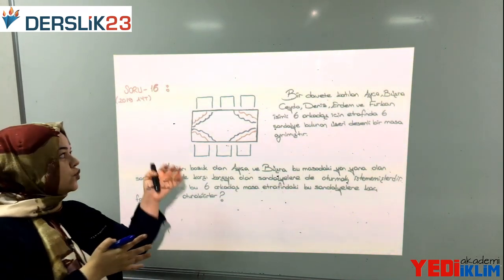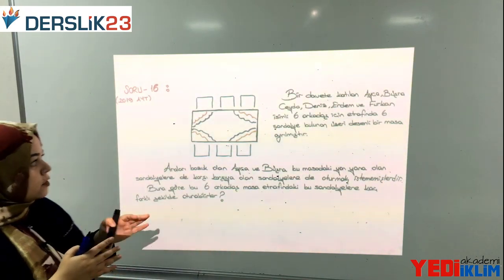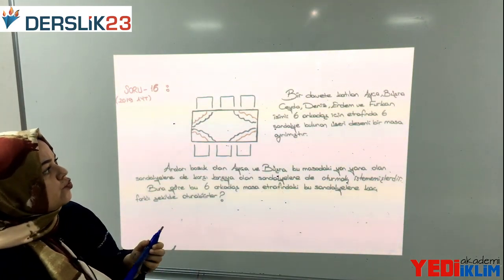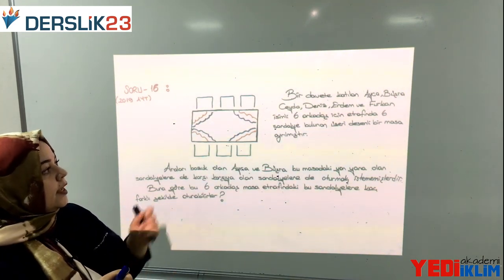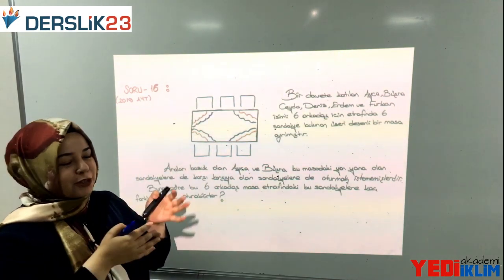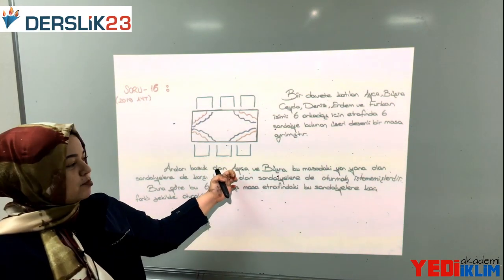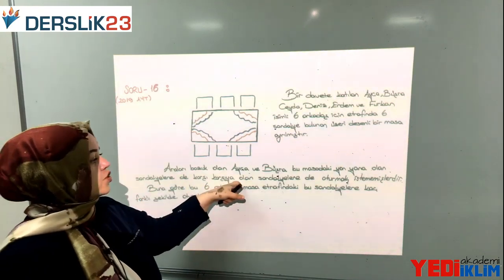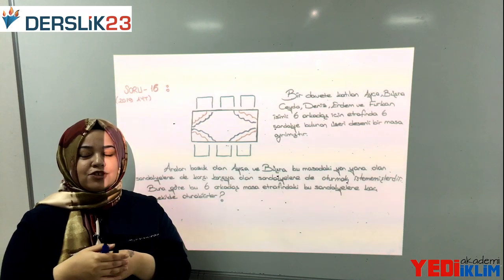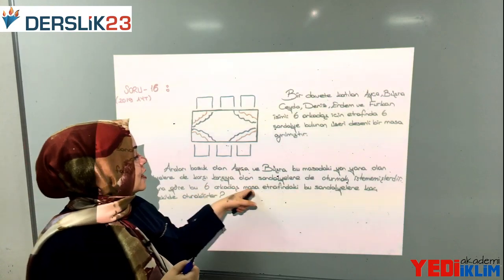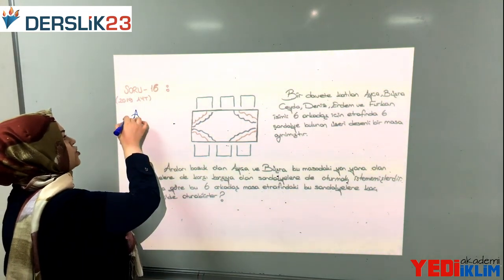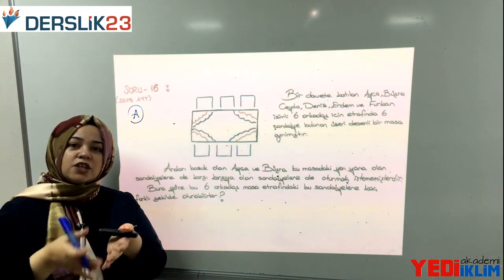Permütasyonun kapanışı olarak 2019'da çıkmış bir soru. Bir masada 6 sandalye var. Davetli Ayça, Büşra, Ceyda, Deniz, Erdem ve Furkan isimli 6 arkadaş için etrafında 6 sandalye bulunan desenli bir masa ayrılmıştır. Araları bozuk olan Ayça ve Büşra bu masadaki yan yana olan sandalyelere de karşılıklı olan sandalyelere de oturmak istememişler. Buna göre 6 arkadaş kaç farklı şekilde oturabilir?